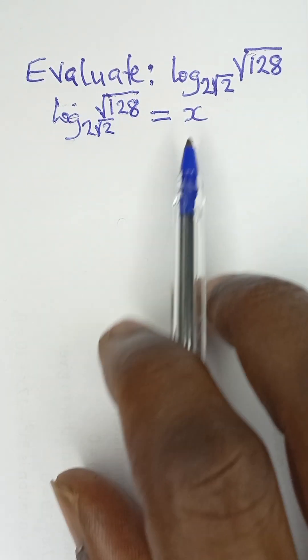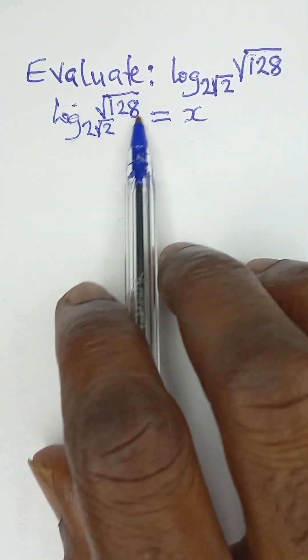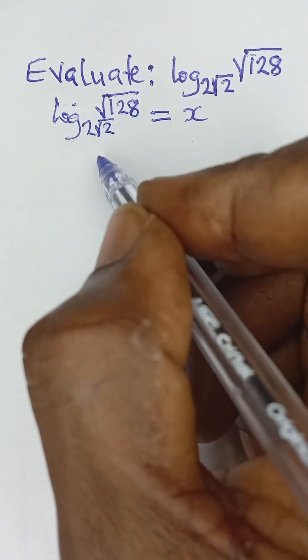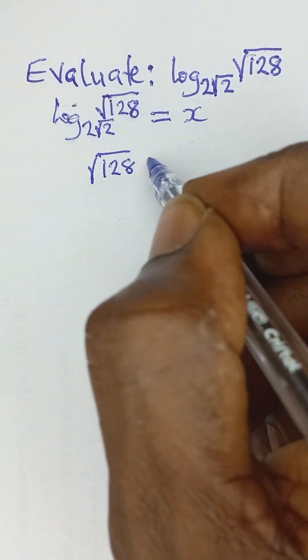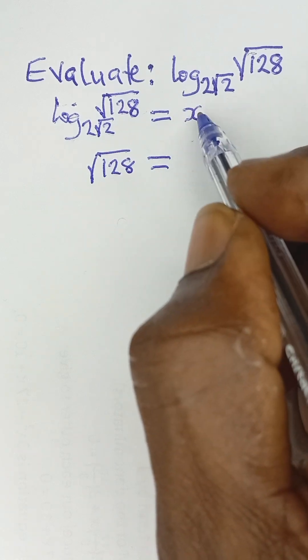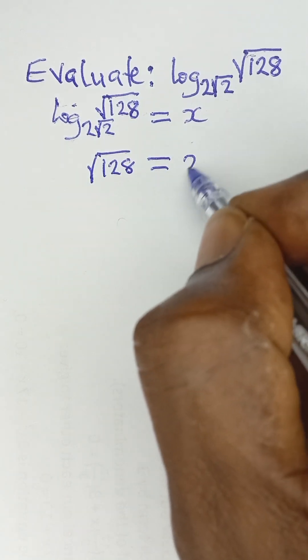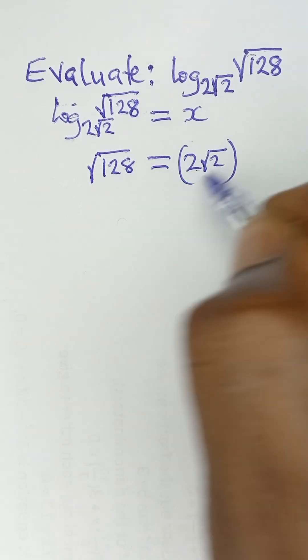Now to convert this logarithmic form to indices, we take root 128 and set it equal to the base raised to the power of the answer. So root 128 equals 2 root 2 raised to the power of x.